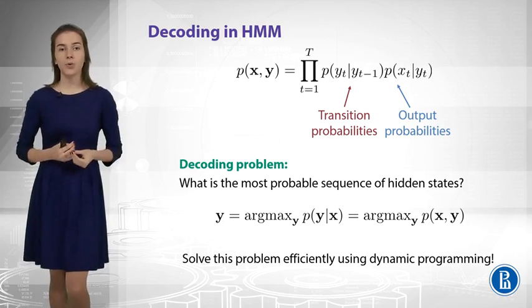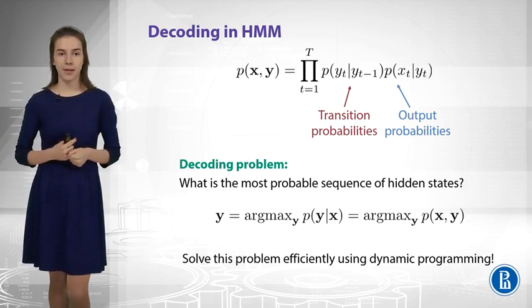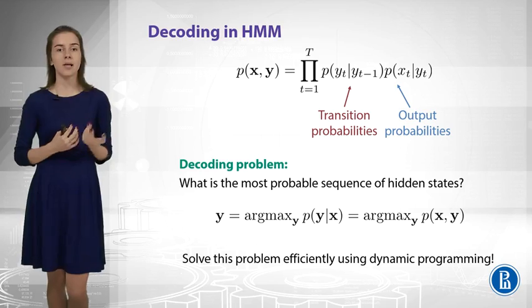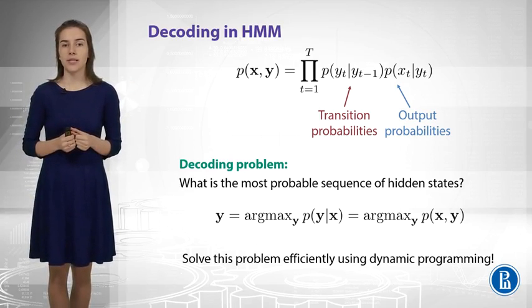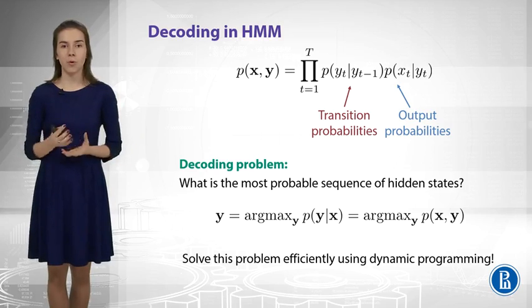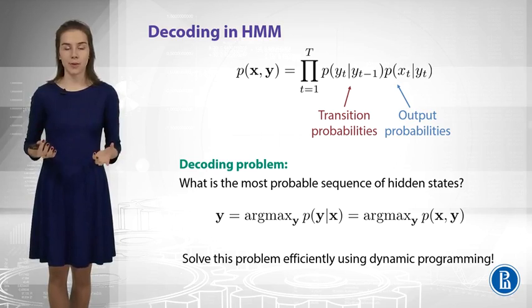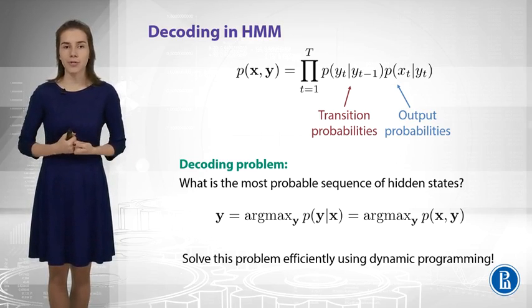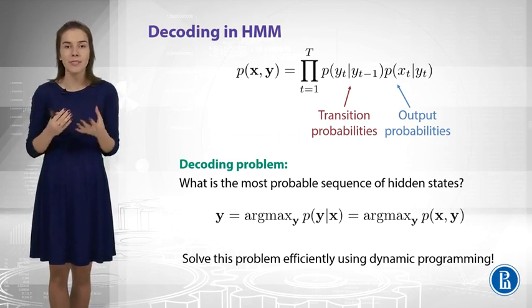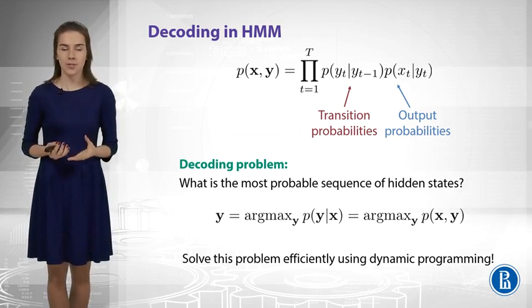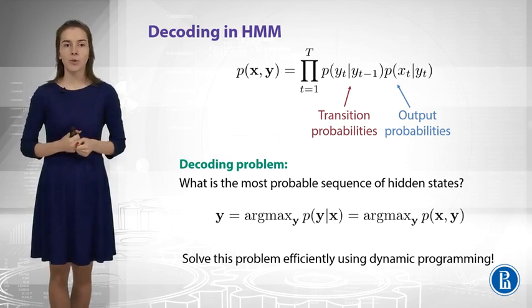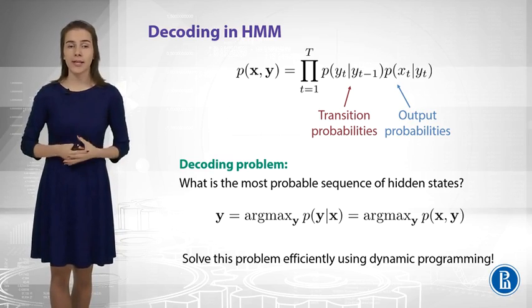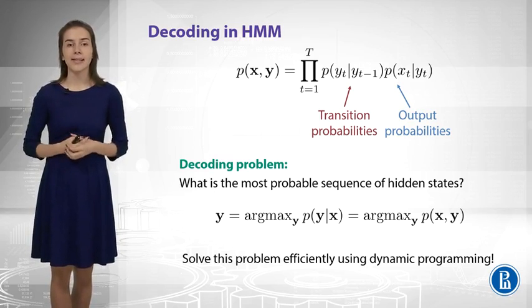So, we need to find y which maximizes the probability of y given x. And as we have briefly discussed, it would be the same as y that maximizes the probability of both variables. Now, could we probably just compute the probabilities of all y's and then choose the best one? Well, not actually, because this brute force approach would be really slow, or maybe not feasible at all, because you have very many different sequences of tags. Let's say you have a big T, which is the length of the sentence, and you have 10 possible states, then you will have T to the power of 10 different sequences. So this is too much. But fortunately, there is an algorithm based on dynamic programming that can help us to do this effectively.